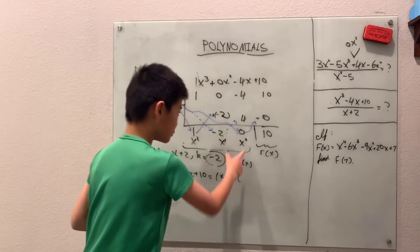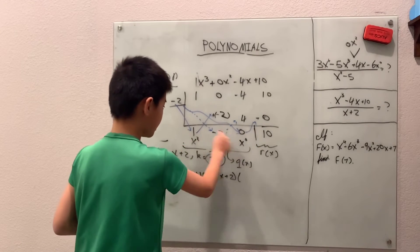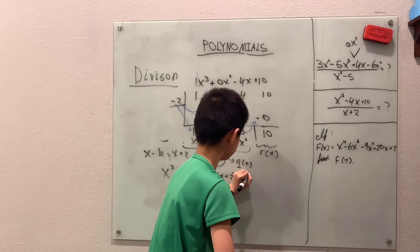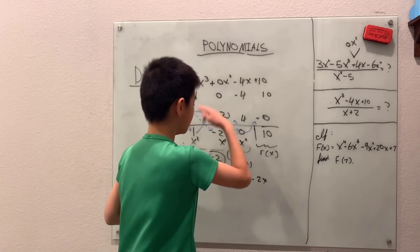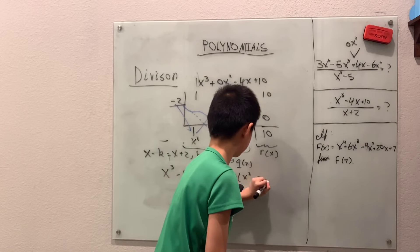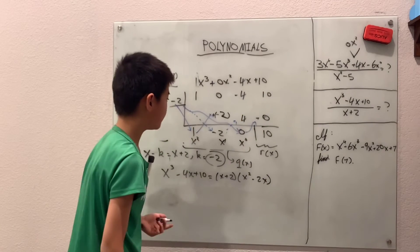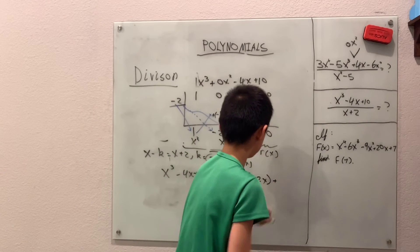So this is one times x squared, and negative two times x to the first, minus 2x plus zero—so just this is fine—plus r(x) which is plus 10.